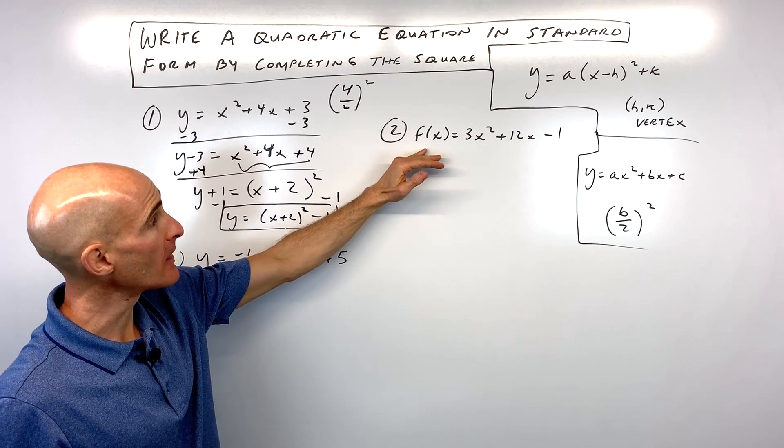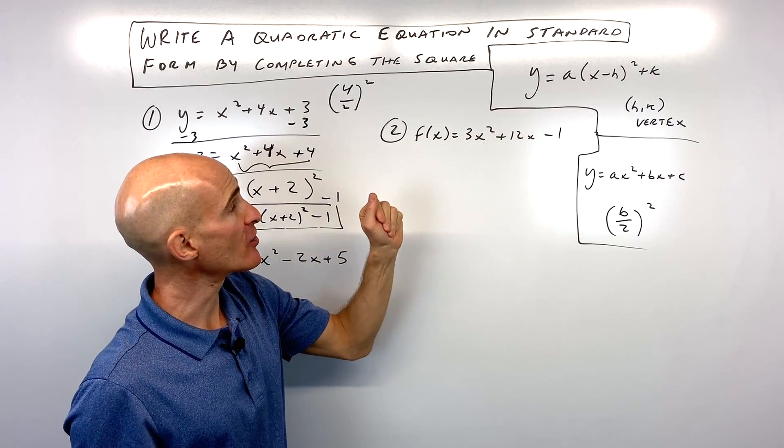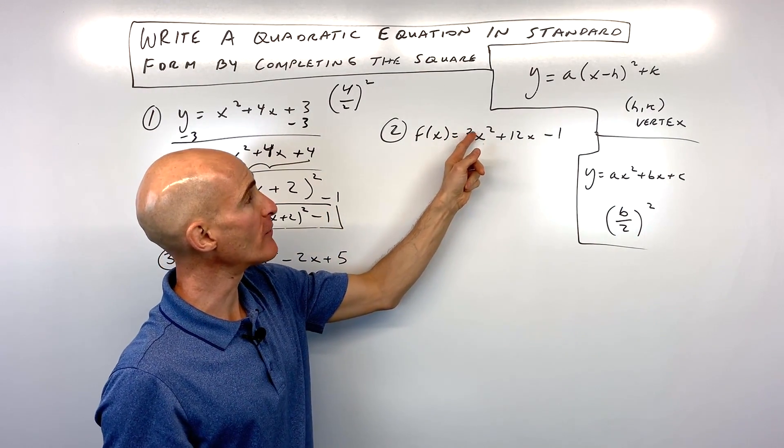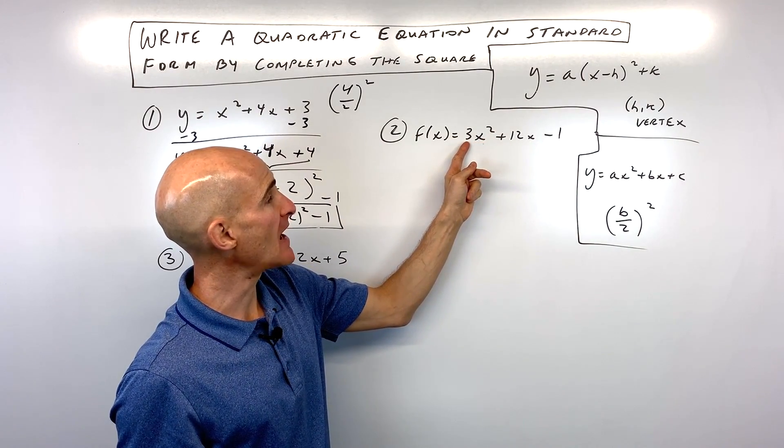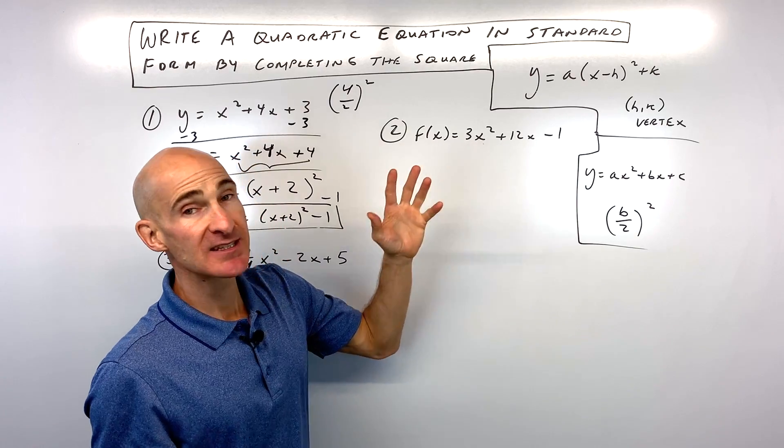So for number 2 now, a little bit more challenge here. And what makes this more challenging is that we have a coefficient, a number in front of the x squared term. Okay, so our a value is not 1, it's 3 in this case. Same process though.